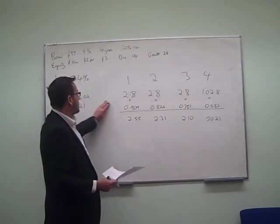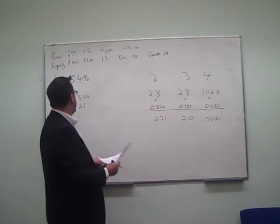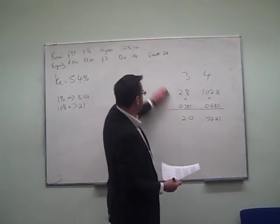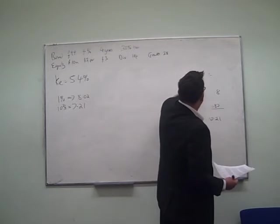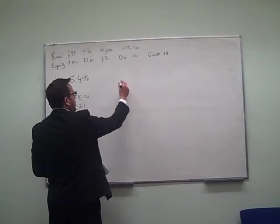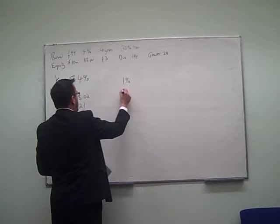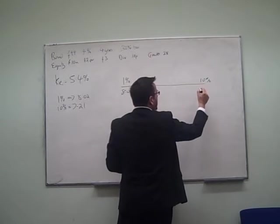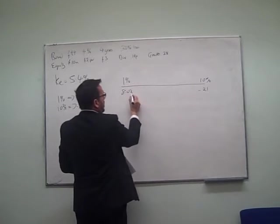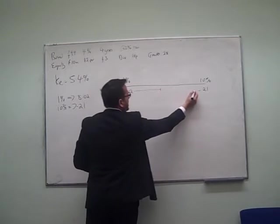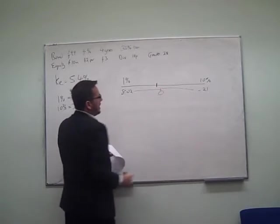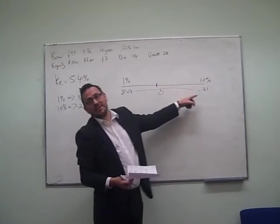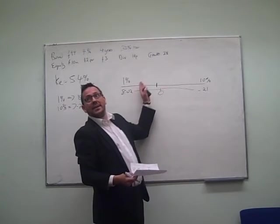Now what we've established is 1% will give us £8 too much, and 10% will give us £21 too little. Clearly, the answer lies between those two values. If we try to establish that value, basically what we're looking at is: at 1%, we get 8.02, and at 10%, we have minus 21. The question is, where along this is zero? As you can see, it's going to be closer to the 1 than the 10 because 8 is a lot closer to zero than 21. Just a quick estimate will tell you it's going to be in the lower end of this range.